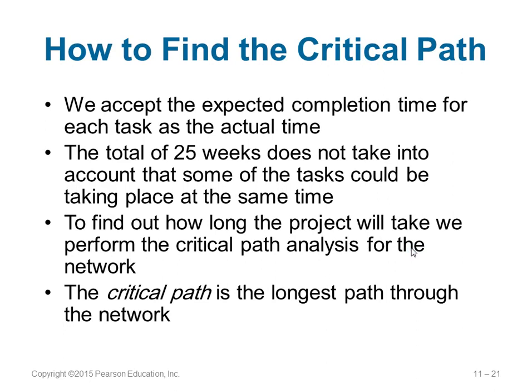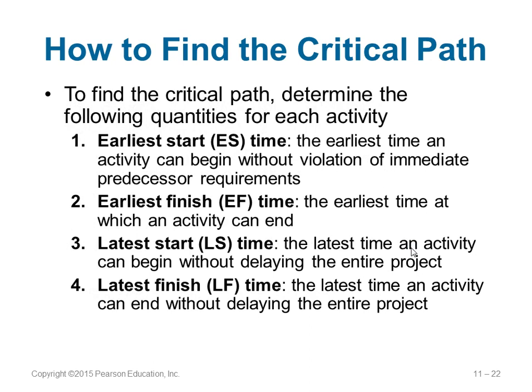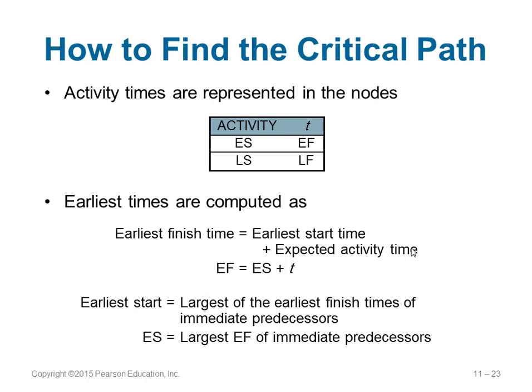To find the critical path, we calculate four things for each activity: Earliest Start time (ES) — the earliest an activity can start without violating any predecessor requirements; Earliest Finish time (EF) — the earliest you can finish; Latest Start time (LS) — the latest you can start without delaying the project; and Latest Finish time (LF) — the latest you can finish without delaying the entire project. EF = ES + t (expected activity time). The ES of any activity equals the largest EF among its immediate predecessors.